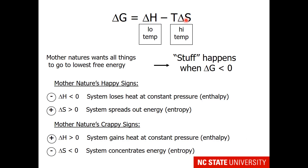In our Gibbs free energy equation, delta H controls activities at low temperature, and minus T delta S controls activities at high temperature. Mother Nature's goal is for all things to go to the lowest free energy, so stuff happens when delta G is negative. Mother Nature's happy signs: when delta H is negative, the system loses heat at constant pressure — an exothermic reaction is preferred. Or when delta S is positive, so the system spreads out energy among multiple states. Mother Nature is not fond of when delta H is positive (endothermic) or delta S is negative, which means the system concentrates energy into fewer states and becomes more ordered as the reaction proceeds.